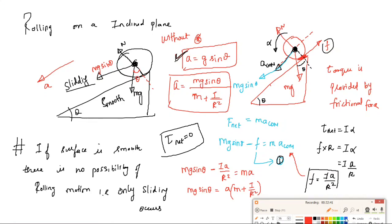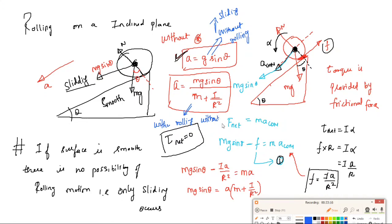Therefore, the acceleration for rolling on an inclined plane with friction is: a_com = mg·sin(theta) / (m + I/r²). Compare: without rolling (sliding only), a = g·sin(theta); with rolling, a = mg·sin(theta)/(m + I/r²). This is a very important result.